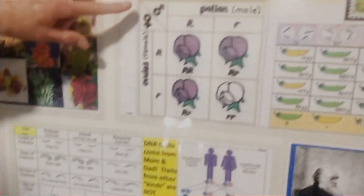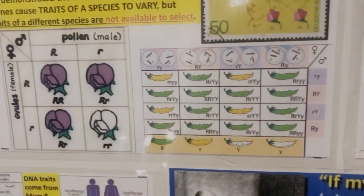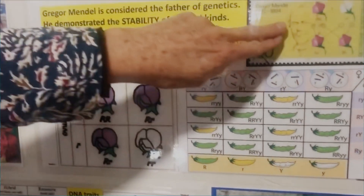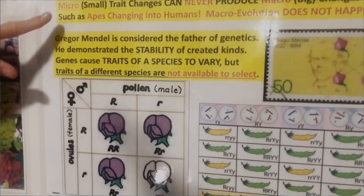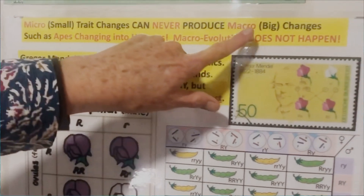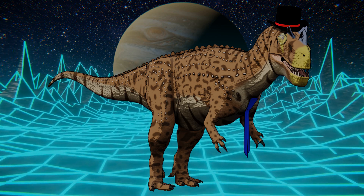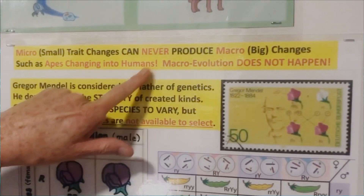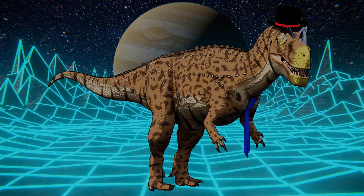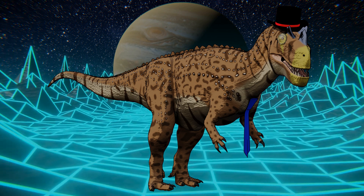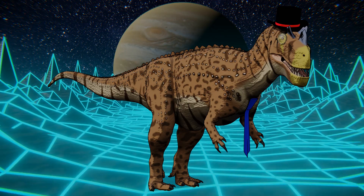This references Mendel's famous experiments with purple and white peas, their seed colors, and inheritance. But the claim that micro changes never produce a different species is contradicted by the flood model itself: a single pair of canines on the ark supposedly producing foxes, wolves, and coyotes is new species. There is far more genetic diversity between a fox and a wolf than between a human and a chimpanzee. If that amount of genetic change is acceptable, then less change should also be acceptable. The flood model being presented requires extensive macroevolution.